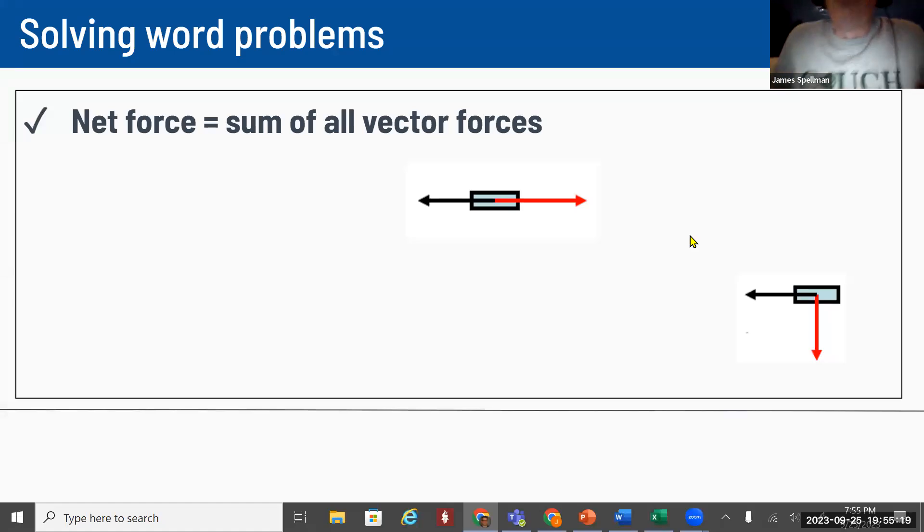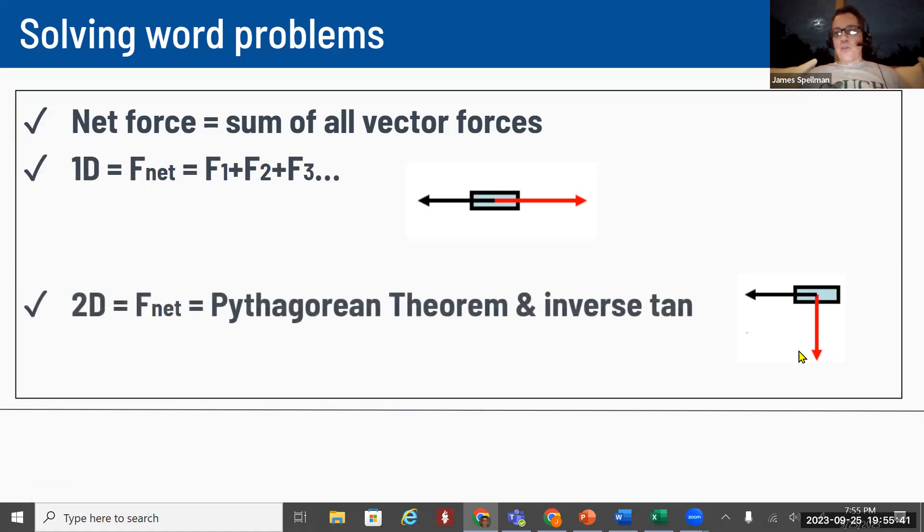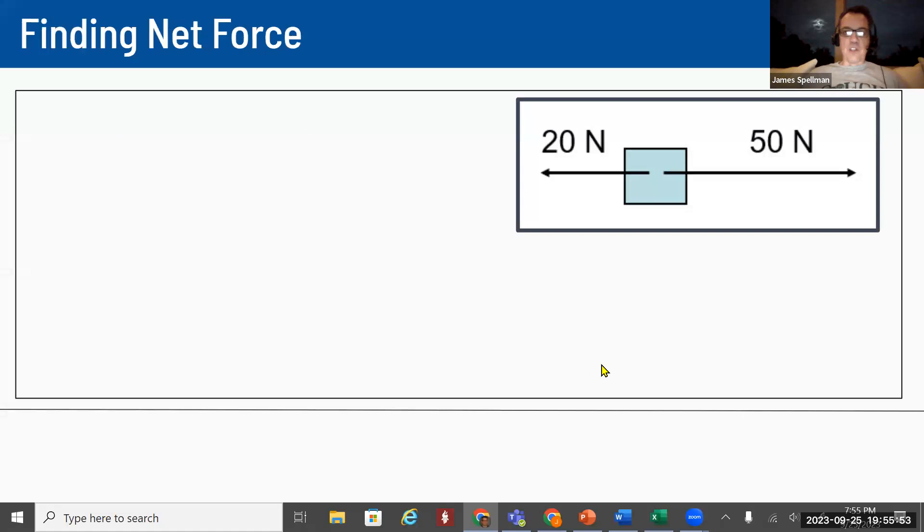So here comes the fun part. We'll look at some word problems. Oftentimes with word problems, we have to take into account all the forces that are acting on something. We want to figure out what's the net force. The net force is the sum of all the forces that's going to be acting on something. And if we have something in one dimension, then we're simply adding them up in that one dimension and taking into account that there may be a negative if something's going in the opposite direction. When we have a two-dimensional motion, then we need to apply the Pythagorean theorem again to get a resultant vector. And then we could use the inverse tangent function on the calculator to figure out what angle that it would be moving in.